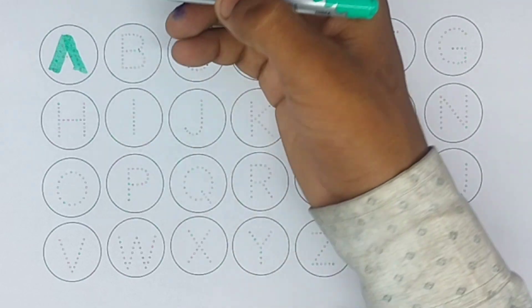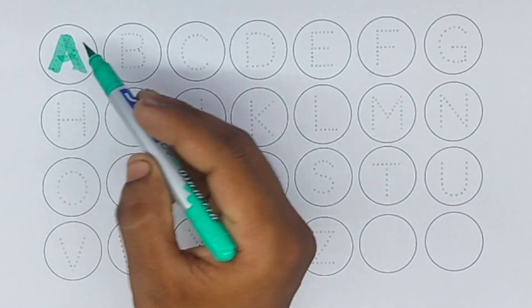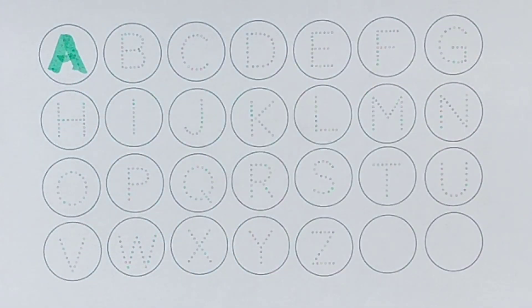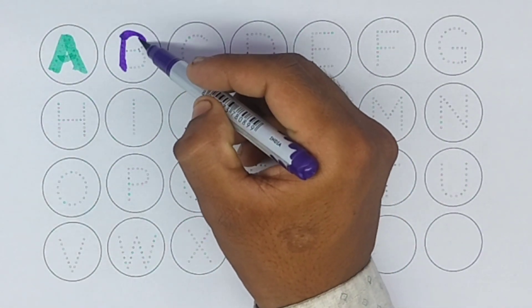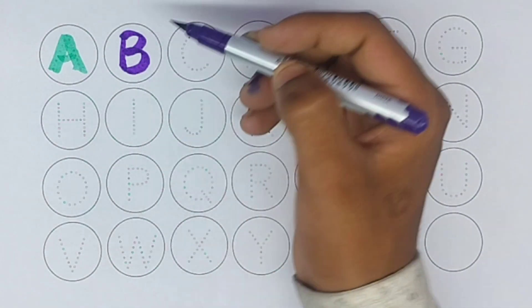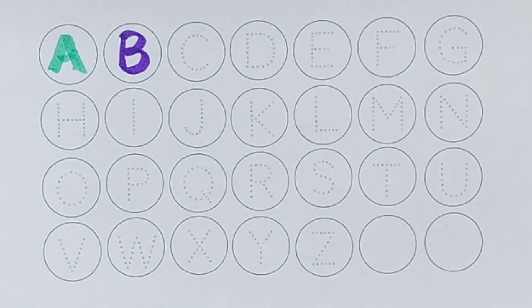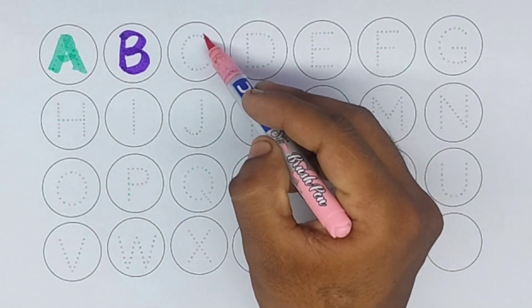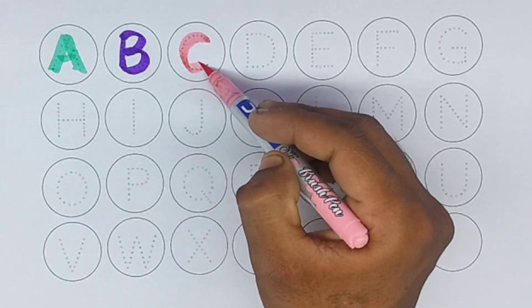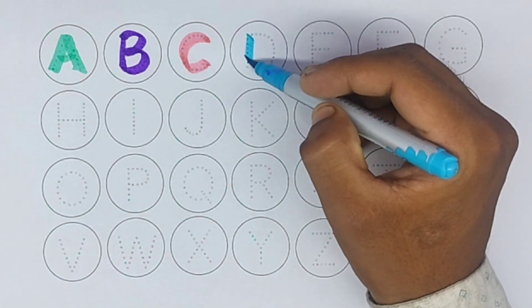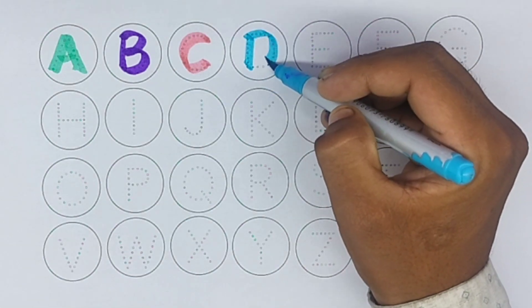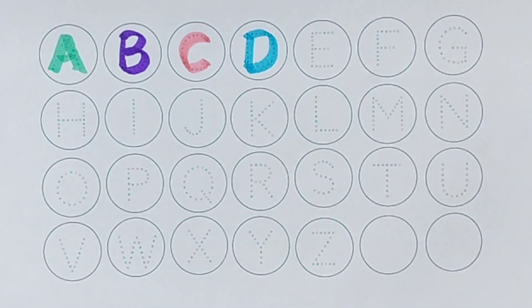A, A for aeroplane. B, B for ball. C, C for cat. D, D for dog.